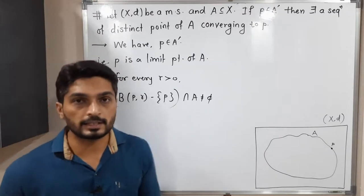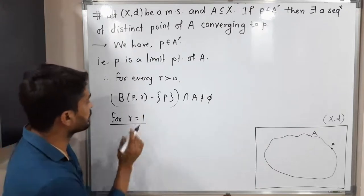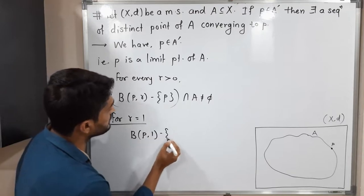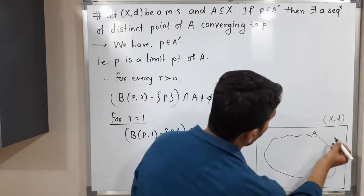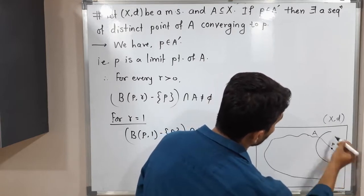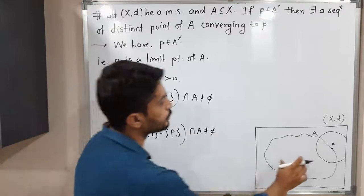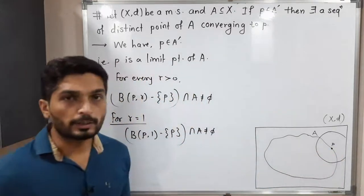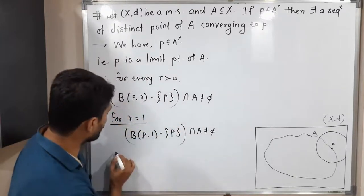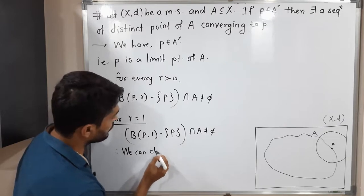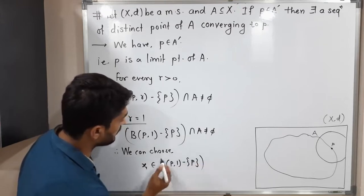Since this is true for every r greater than 0, we can take r equal to 1. For r equal to 1, we can write: B(p,1) minus {p} intersected with A is not empty. That means if we draw an open ball with center p and radius 1, removing p from that ball, the intersection with A is non-empty. So we can choose x₁ belonging to B(p,1) minus {p} intersected with A.